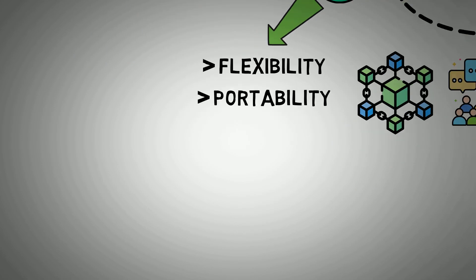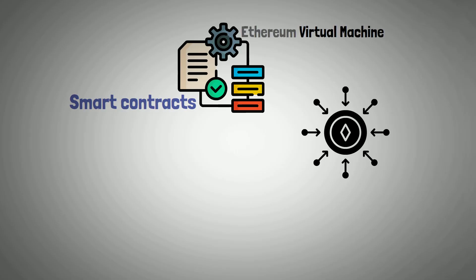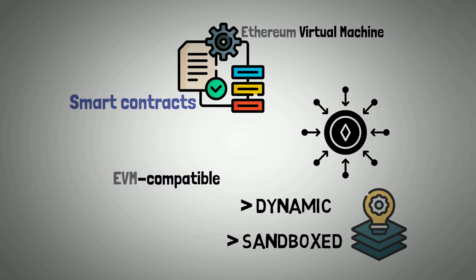Smart contracts can be carried out by the Ethereum virtual machine because each Ethereum node contains a dynamic sandbox virtual stack that runs EVM-compatible smart contract bytecode.